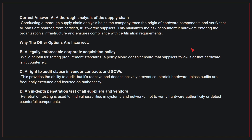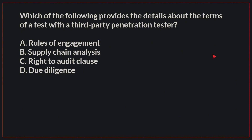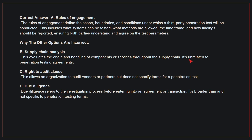Therefore, the correct answer is A. Which of the following provides the details about the terms of a test with a third-party penetration tester? The correct answer is A: Rules of engagement. The rules of engagement define the scope, boundaries, and conditions under which a third-party penetration test will be conducted.